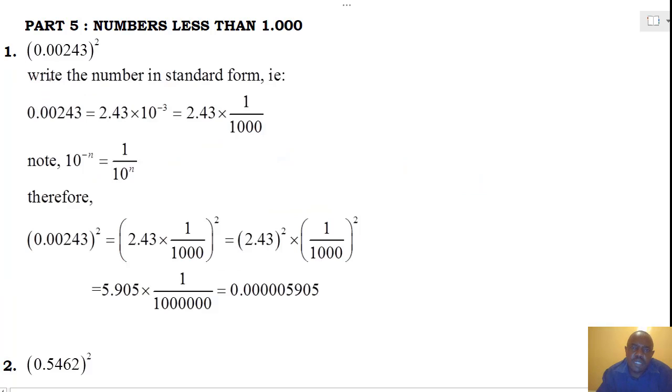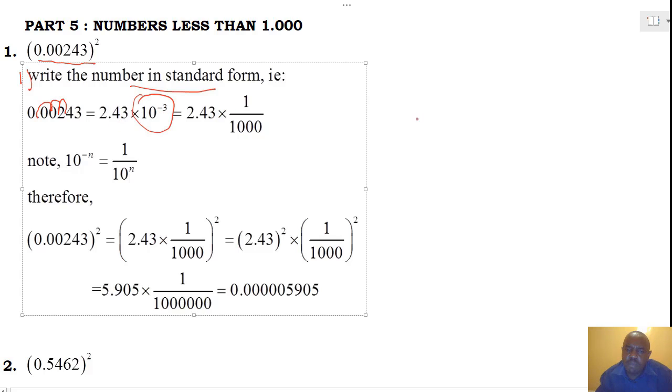Now, our last category is numbers less than 1.00. We are going to consider our first number as 0.00243 square. First step we'll do is write the number in standard form. And as we had earlier learned, the decimal point will move 1, 2, 3 steps. And our number becomes 2.43 times 10 to the power minus 3. Remember the idea, 10 to the power minus N is therefore equals to 1 over 10 to the power N.